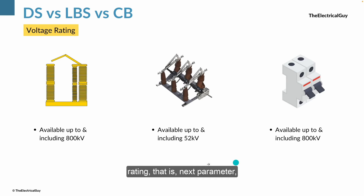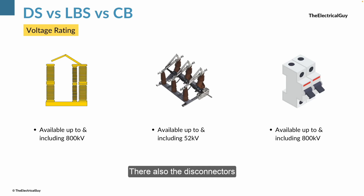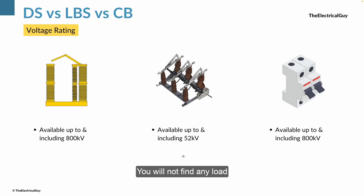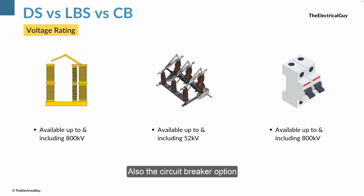The next parameter is voltage rating. Disconnectors are available across all switchgear levels — up to and including 800 kV, and also at ultra-high voltage levels like 1100 kV. Load break switches are only available up to and including 52 kV — you will not find a load break switch rated at 245 kV or 400 kV. Circuit breakers, like disconnectors, are also available up to and including 800 kV and at ultra-high voltage levels.